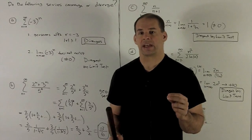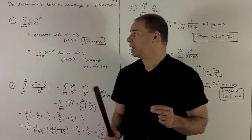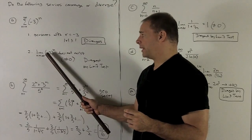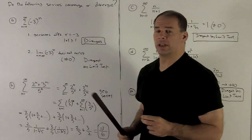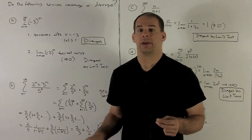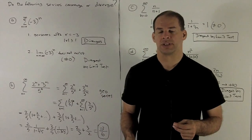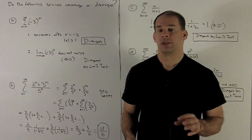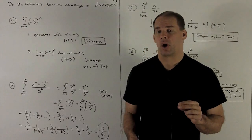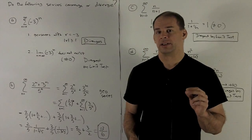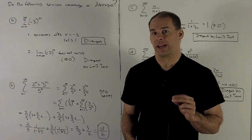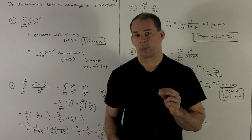Another way: we can use the limit test for series. The limit of (-3) to the n as n goes to infinity is not going to exist — it will oscillate and go off to plus and minus infinity, going back and forth, never settling anywhere. So the limit does not exist. All we really care is that the limit does not go to 0. If the limit does not go to 0, then it has to diverge.